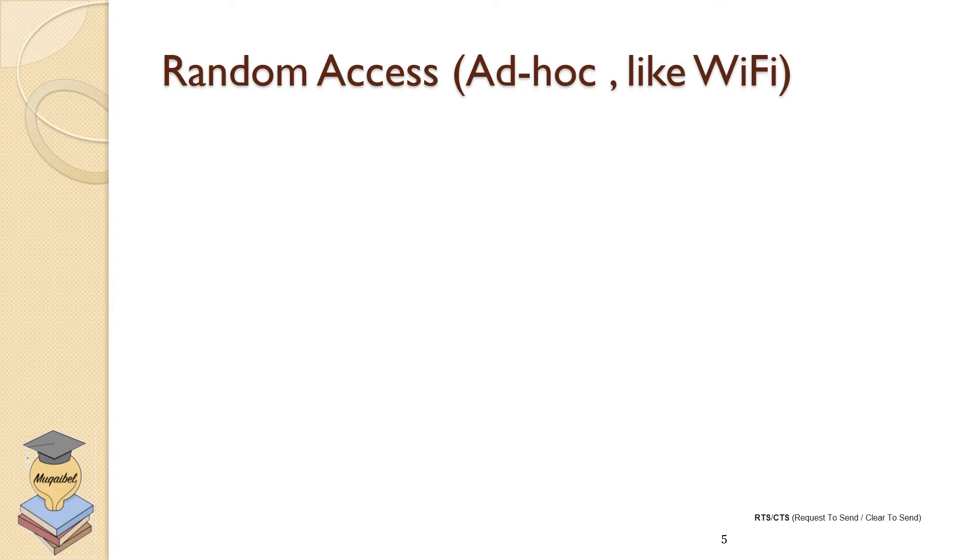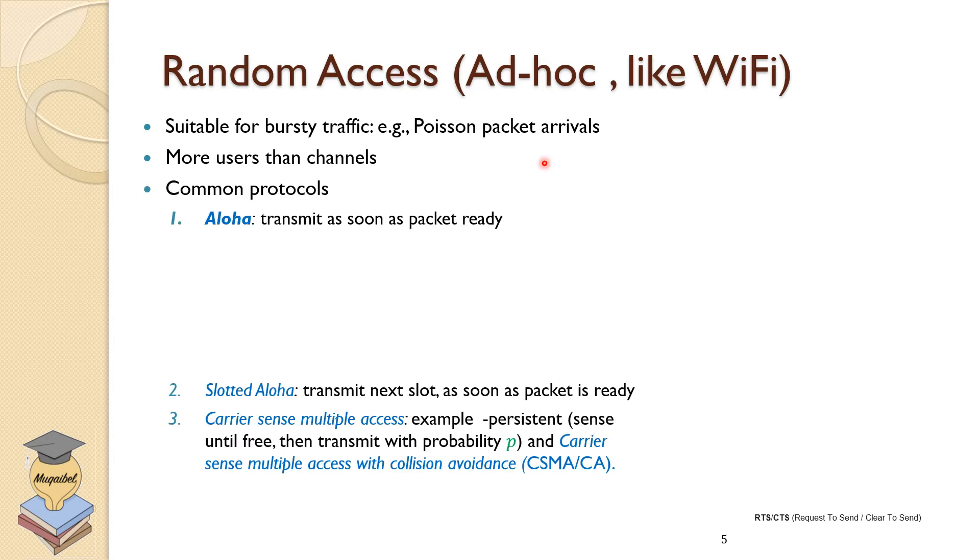For the case of random access, random access is different than multiple access. I just want to give you an idea because we didn't cover networking much here. For the random access, you would hear about ad hoc, and in the case like Wi-Fi, how do different users get into the channel? What is special about Wi-Fi and data applications? We might have some bursty traffic, which means that data comes not in a continuous way, but it comes in bursts. We can use models like Poisson models for packet arrivals. We have more users than channels because if the users are less than the channels, there's no problem. Everyone would be assigned a channel.